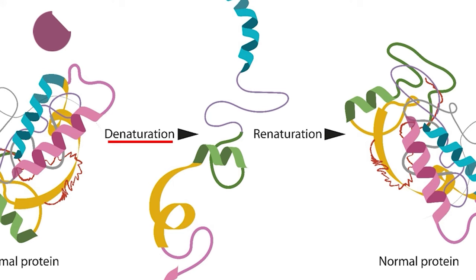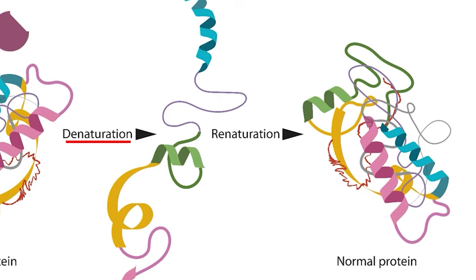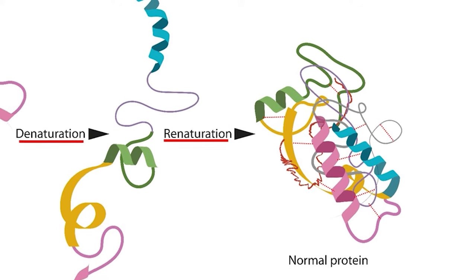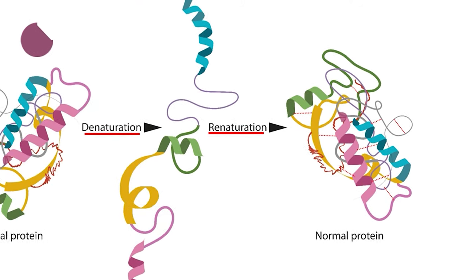Even if some of the secondary motifs are still present in the structure, the enzyme has completely lost the most important parts of its 3D shape. In rare instances with simple proteins, the enzyme can re-nature if it is placed back into the right environment, meaning the hydrogen bonds and weak interactions will re-form, drawing the enzyme back into a working 3D structure. However, this is not always possible. That is why it is so important that a cell stays within a specific range of temperatures, pH values, and other environmental variables.